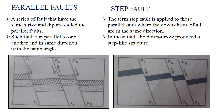The first fault of classification 3 is parallel fault. A series of faults that have the same strike and dip are called the parallel fault. Such faults run parallel to one another and in the same direction with the same angle. A fault is the displacement of rock blocks relative to each other — this structure or process is called a fault.